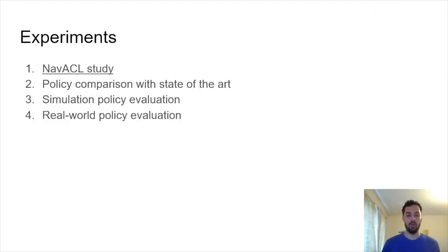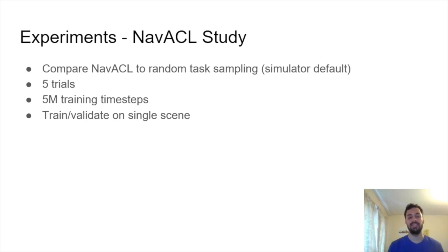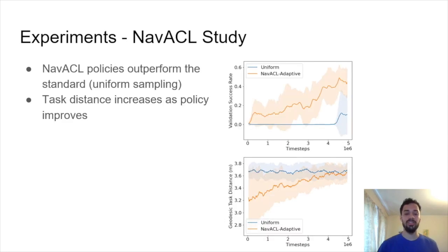Now let's talk about our experiments. We've done four experiments. First, we evaluate NAVACL. Then we study our policy against state-of-the-art. We do a more in-depth simulation policy evaluation, and then we take our policies trained in simulation and we evaluate them in the real world. In our NAVACL study, we compare NAVACL to random task sampling. This is the simulator default using the CVPR challenges. We have five trials. Each trial has five million training time steps and we're training and validating on the same single scene. We find that policies trained with NAVACL greatly outperform the standard. So this is NAVACL. This is uniform sampling.